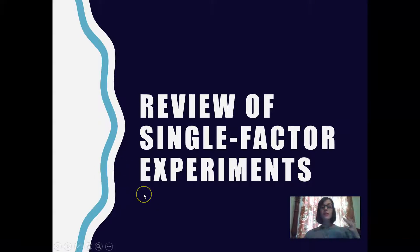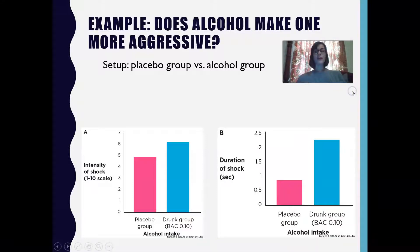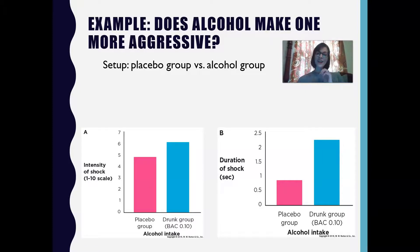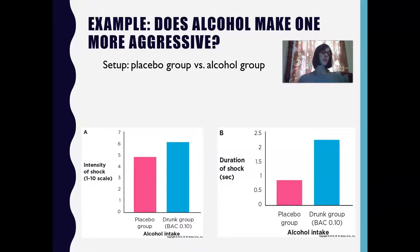Let's do a brief review of single factor experimental designs. For example, your textbook has a very simple example: does alcohol actually make one more aggressive? If you've had my bio psych class, you know that the answer is yes. But obviously, you want to do some research and make sure there's actually some evidence that can back that up. So this is a pretty straightforward experiment that some researchers did.